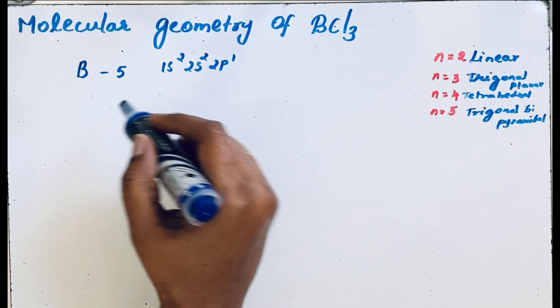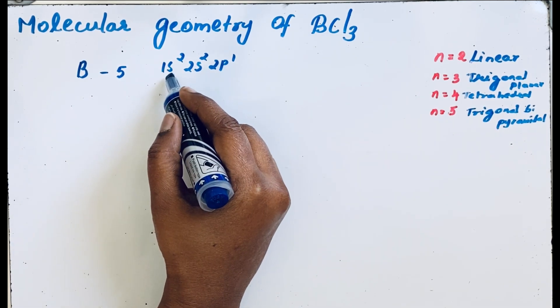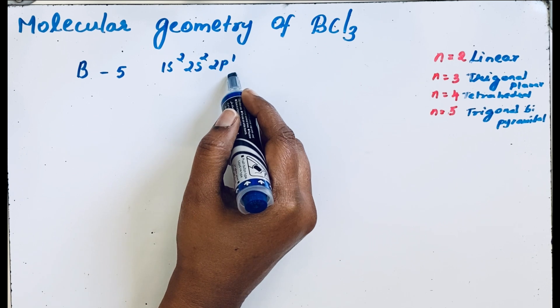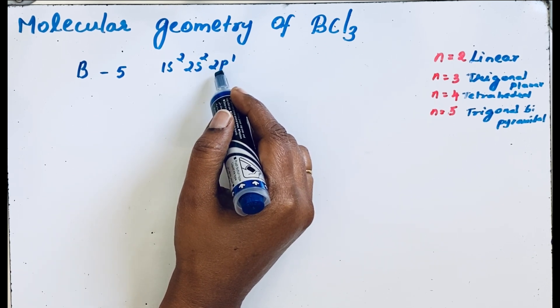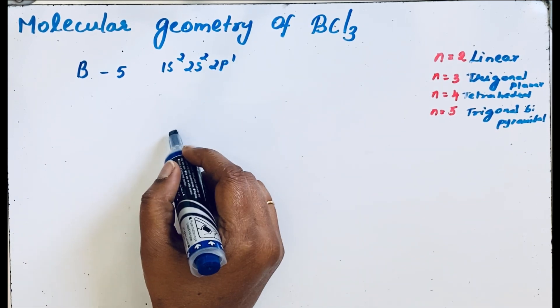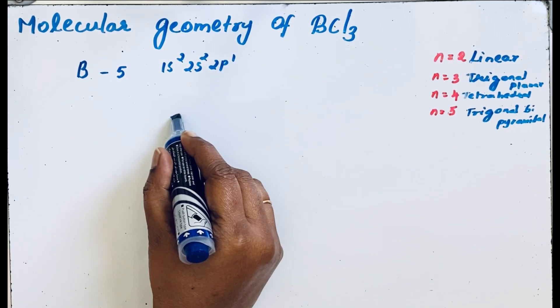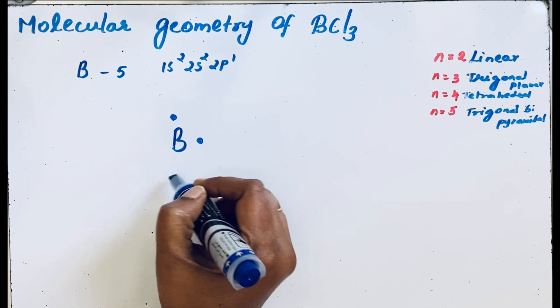Boron atomic number is 5 and its electronic configuration is 1s2 2s2 2p1. There are three valence electrons present, so we can represent in the Lewis dot structure: boron 1, 2, 3.